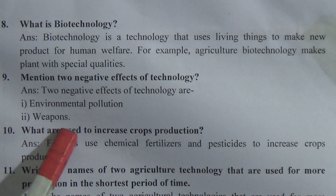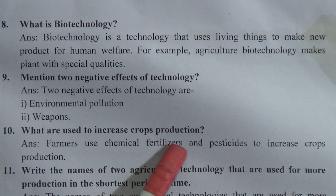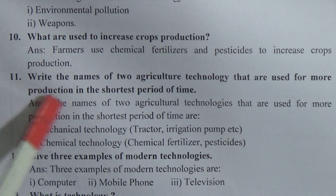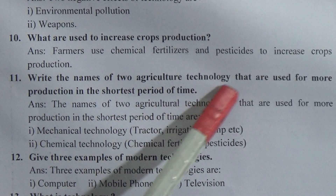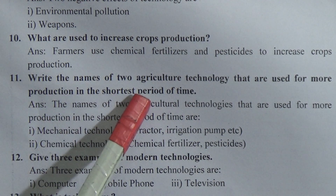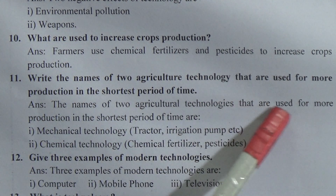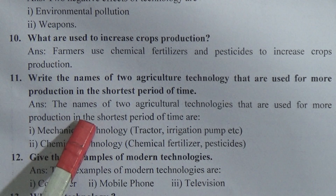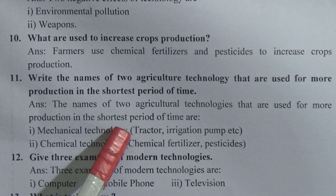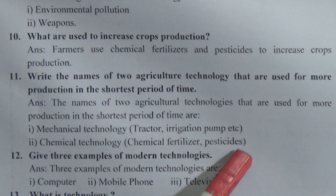Question 10: What is used to increase crop production? Answer: Farmers use chemical fertilizers and pesticides to increase crop production. Question 11: Write the names of two agricultural technologies used for more production in the shortest period of time. Answer: First, mechanical technology — tractor, irrigation pump, etc. Second, chemical technology — chemical fertilizer, pesticide, etc.